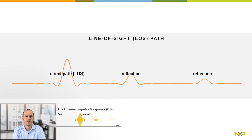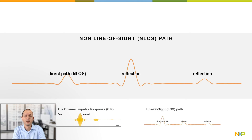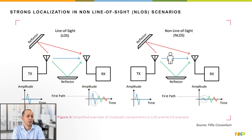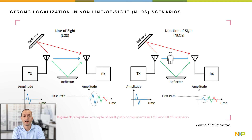Accurate ranging is needed both in line-of-sight and non-line-of-sight scenarios, such as crowded multi-path scenarios with numerous walls, people and other obstacles. NXP's UWB solutions are designed to provide the needed robustness in these non-line-of-sight scenarios.